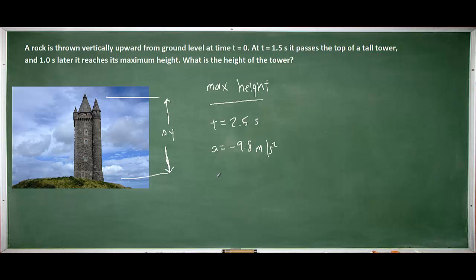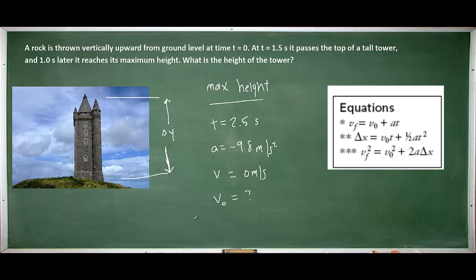We also can insert the final velocity of the stone because for any object that reaches its maximum height, its final vertical velocity is going to be 0 meters per second. And from this information, we're going to be able to calculate the initial velocity of the stone using an equation from kinematics. You might want to pause the video here and decide which equation you're going to use. But after doing so, you should arrive at the following equation.